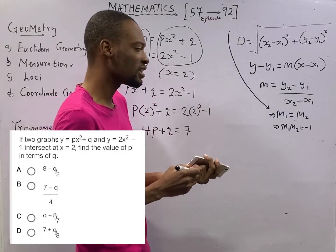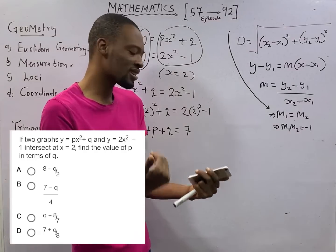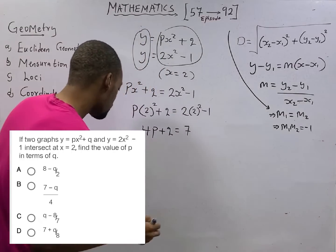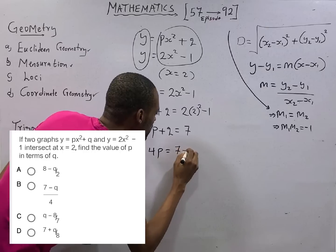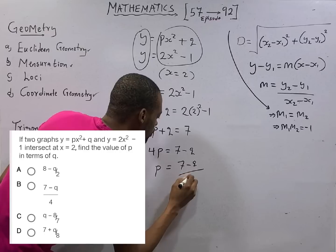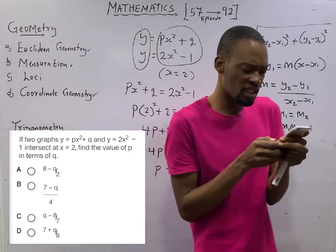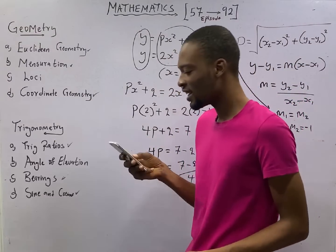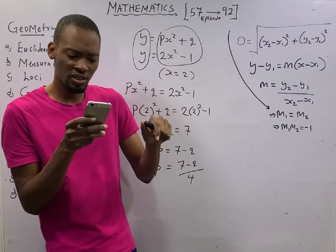If you are saying find a in terms of b, it means make a subject of formula. So making p subject of formula here is 4p equals 7 minus q, p is (7 minus q) over 4. And that makes option B so familiar.